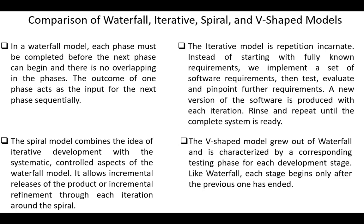The spiral model combines the idea of iterative development with the systematic, controlled aspects of the waterfall model. It follows incremental releases of the product or incremental refinement through each iteration around the spiral. The V-shaped model is similar to the waterfall model, except that testing is performed for each development stage. Like waterfall, each stage begins only after the previous one has ended.